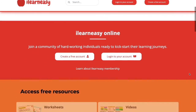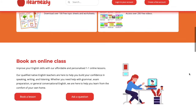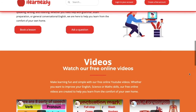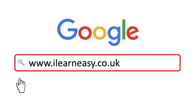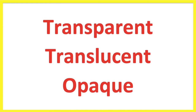To access free topic sheets, worksheets, or to book an online class, visit ilearneasy.co.uk. In this video, we will learn the difference between transparent, translucent and opaque. Different materials allow different amounts of light to pass through them. Depending on the level of light allowed through, the material can be transparent, translucent or opaque.